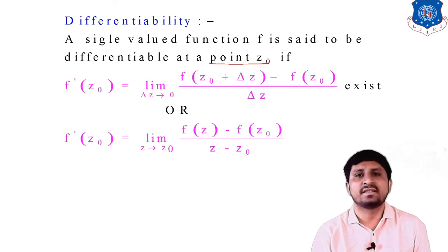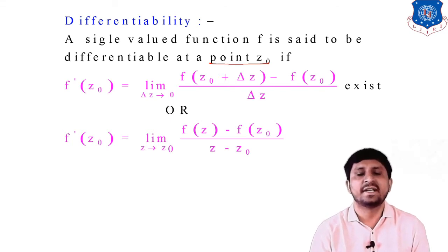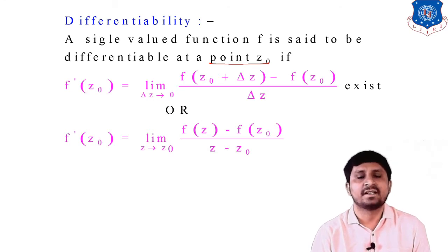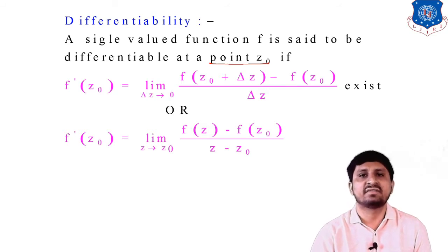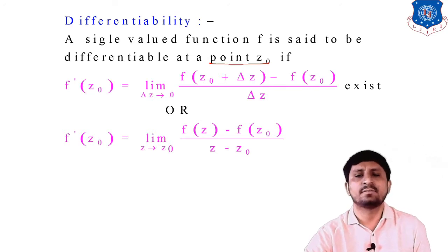Today's first topic is differentiability. As discussed in the last lecture, if f'(z₀) exists — that is, if the limit as δz tends to 0 of [f(z₀ + δz) − f(z₀)] / δz exists — then we say the function is differentiable at point z₀. If this limit does not exist, the function is not differentiable.